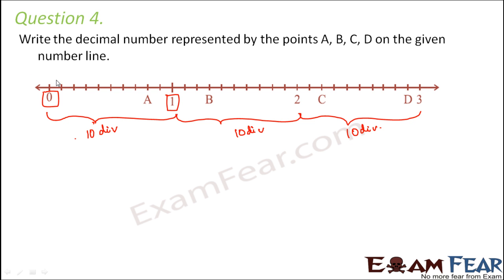So that means this one division, how much would be one division? It would be one out of ten, that is one by ten. So one by ten is nothing but 0.1. Again, what would be this?